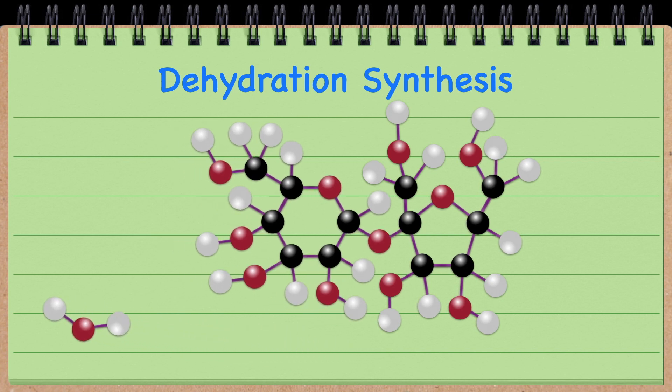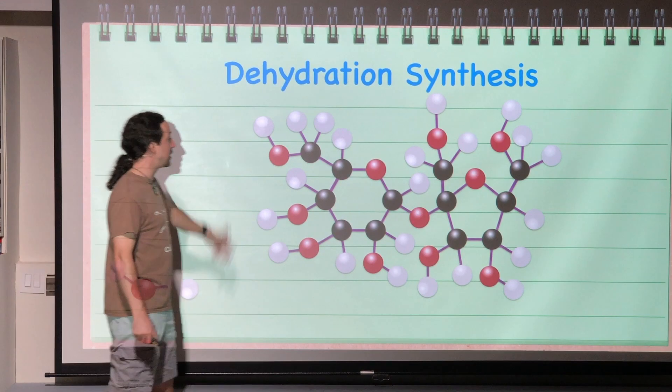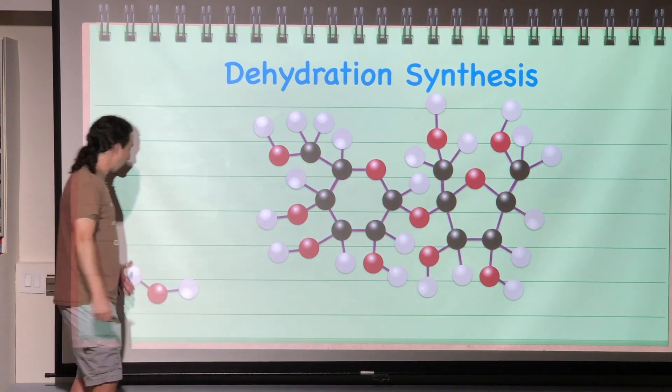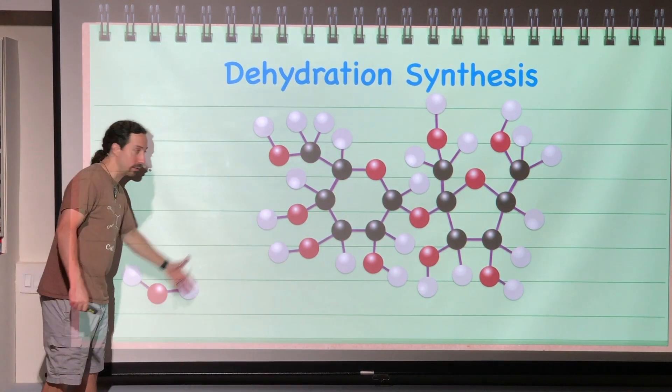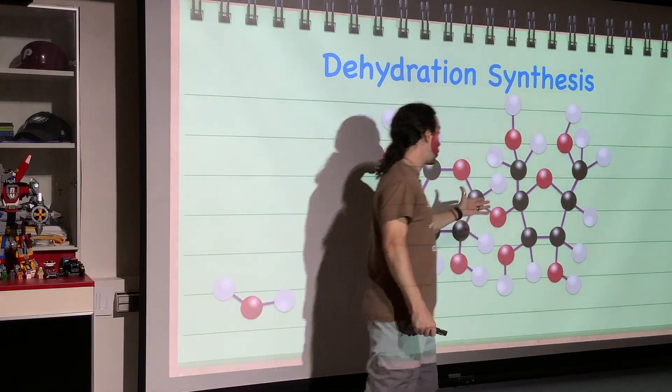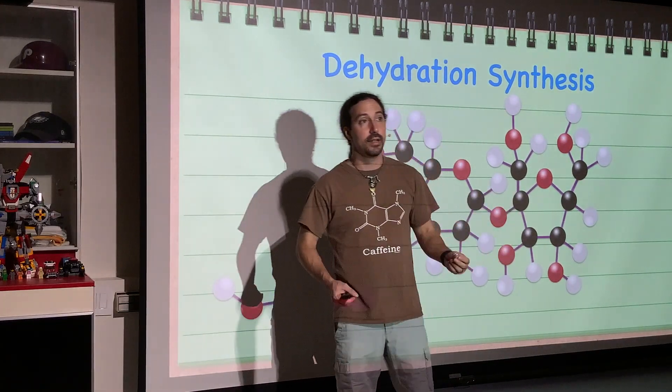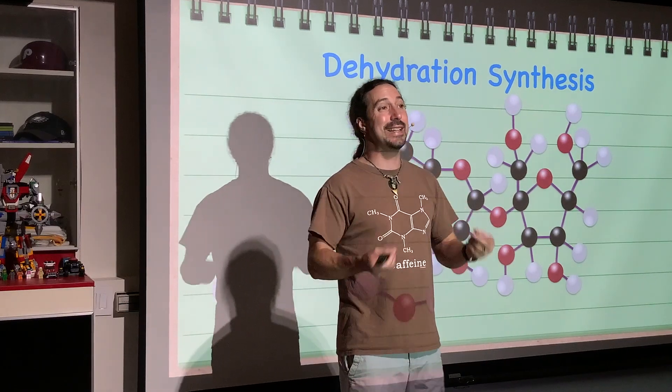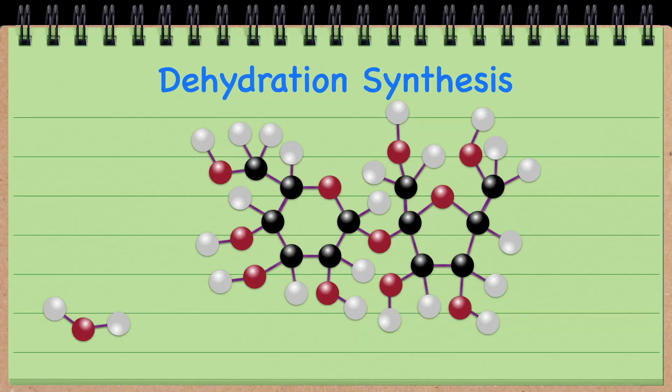And then they bond. And there we go. So this is dehydration synthesis where we have removed this water molecule right here. And the components to build this water molecule came from the glucose and the fructose. The water molecule didn't exist until those two monomers joined together and made our dimer. And that's dehydration synthesis.